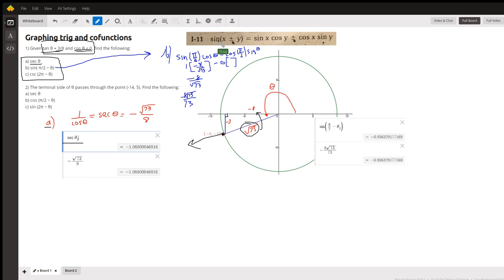For part b, probably makes sense to use the identity for the sum or the difference between two angles. So we're going to, in this identity right here, let x represent the π over 2 and y represent theta.